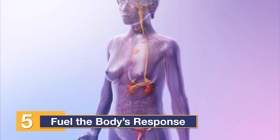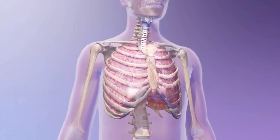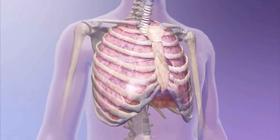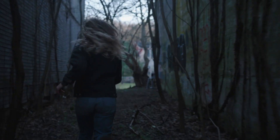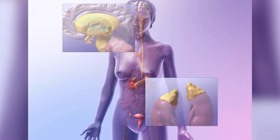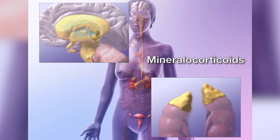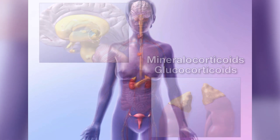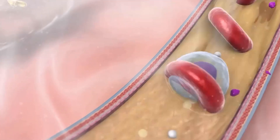Hormones control ongoing internal functions and also enable our body's reactions to changes in the environment. These hormones promote the fight-or-flight response where breathing and heart rate increase and our muscles get a burst of energy. If the situation continues, the endocrine system kicks into the resistance phase where the hypothalamus directs the pituitary to release ACTH, which then stimulates the adrenal glands to release mineralocorticoids and glucocorticoids and the pancreas to secrete glucagon. These hormones increase blood sugar while sustaining elevated blood flow and energy levels for prolonged stress.